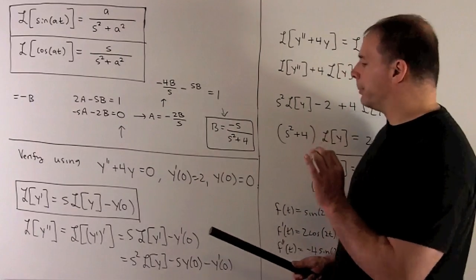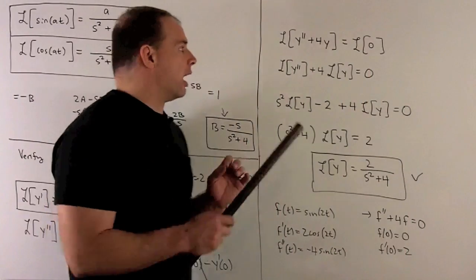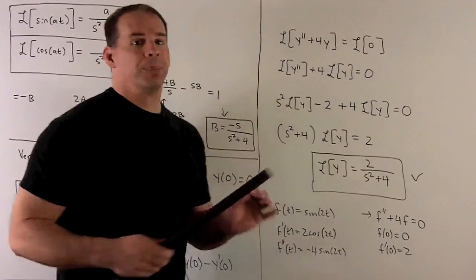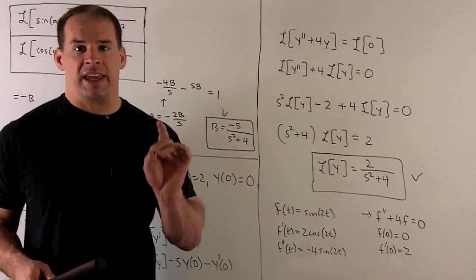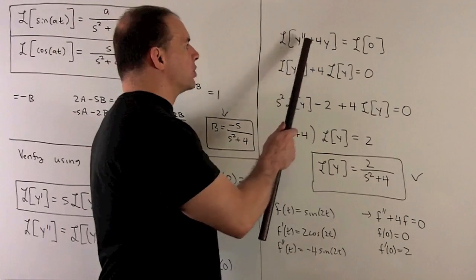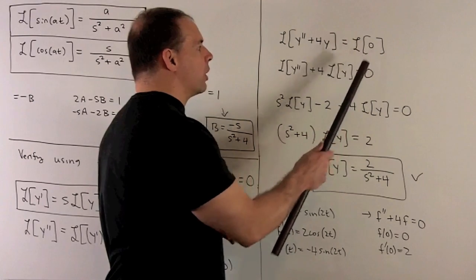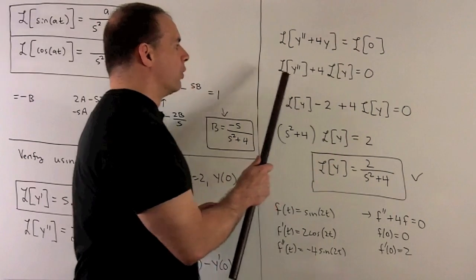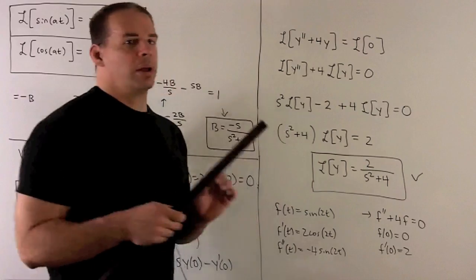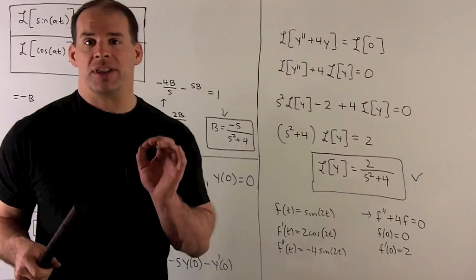What do we want? We're going to take the Laplace transform of two things are equal. Laplace transforms are going to stay equal. So, we're going to do y double prime plus 4y equal to 0. Laplace transform of 0 is going to be 0. Then over here, I'm allowed to split this up, pull out the numbers. That's because of the linear property.